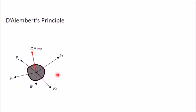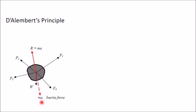But suppose if I apply an imaginary force which is equal to R but opposite in direction, with the same line of action — that means the point of application is the same point — that means if I apply a force equal to Ma but in a direction opposite to R, then this body will come in equilibrium. In that condition, you can apply equations of equilibrium. This force which is applied opposite to the resultant is called the inertia force, and this is an imaginary force.